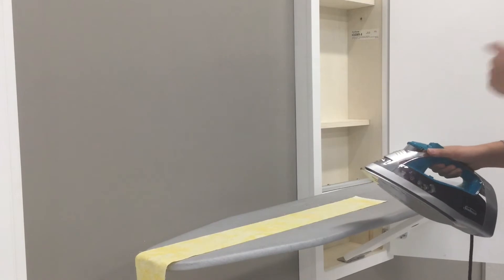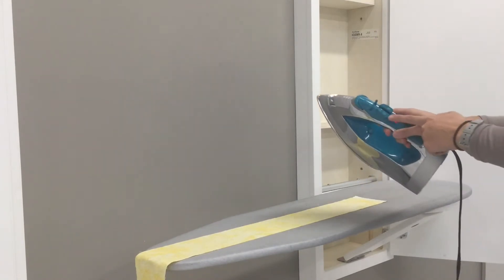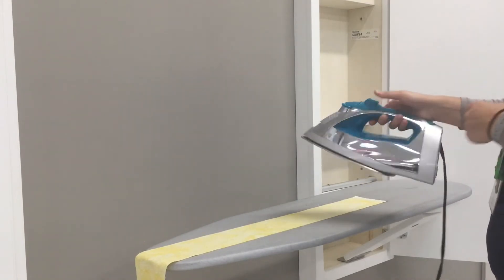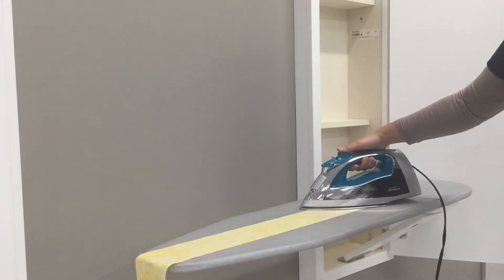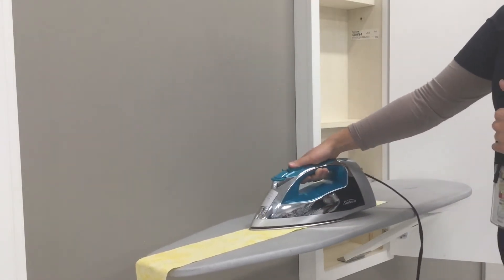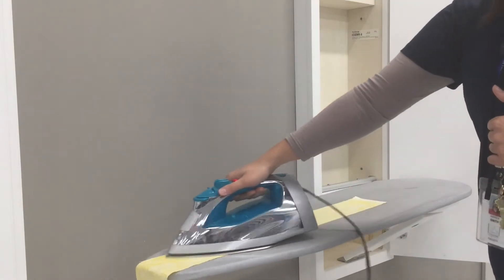If they're stubborn and they're not coming out, you can press this button here with a cloud—it'll actually shoot some steam out. Steam relaxes your fabric a little bit and will actually allow the wrinkles to come out.